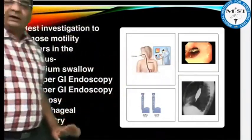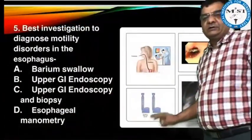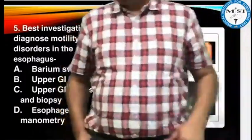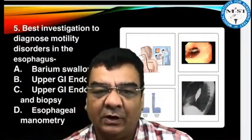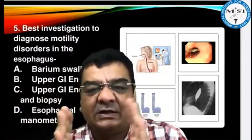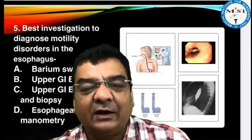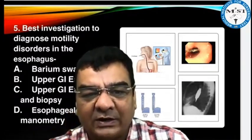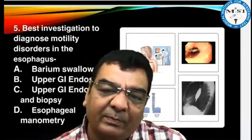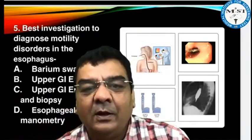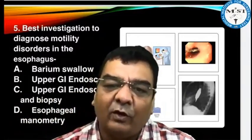Manometry is basically the measurement of pressure inside the esophagus. The question is asking about motility — that means peristalsis. Upper GI endoscopy doesn't assess peristaltic movements; it only looks inside at the mucosa. So endoscopy is best for mucosal or intraluminal pathologies, and endoscopy with biopsy is specifically indicated when there is a polyp or tumor inside.